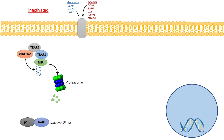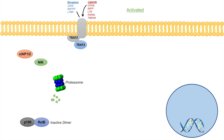When a ligand binds to its corresponding receptor and activates the non-canonical NF-kappa-B signaling pathway, instead of the protein complex involving TRAF2, TRAF3, and CIAP binding to NIK, TRAF2 and TRAF3 are recruited to the membrane — to the activated receptor. CIAP then follows TRAF2 and TRAF3 and binds to TRAF2, leaving the NIK protein alone. TRAF3 no longer binds to NIK, so CIAP is unable to ubiquitinate NIK, which leads to NIK levels becoming increased within the cell.